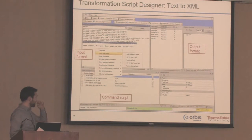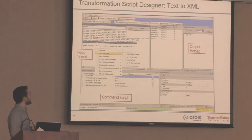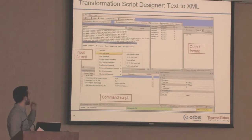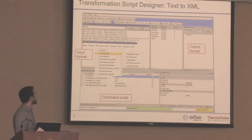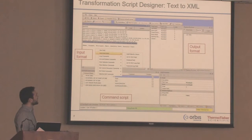The transformation script designer looks quite complicated, but it can be quite easy to understand if you break it down. This example is for a text-to-XML transform. There are three different screens: on the top left we have the input format, which here is a CSV file; on the top right we have the output format, which is a basic XML file; and on the bottom left we have the command script used to transform one file to the other.